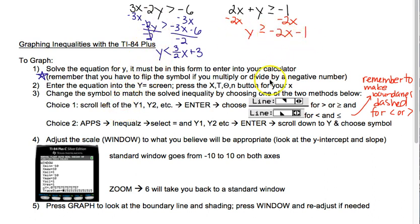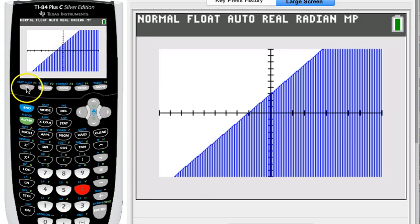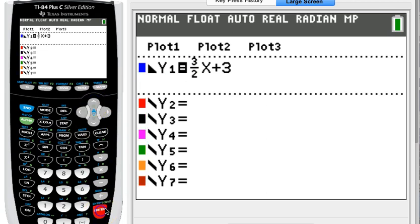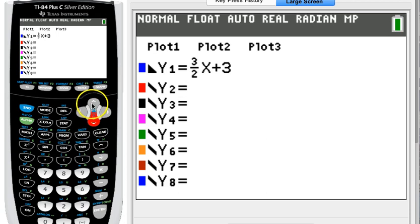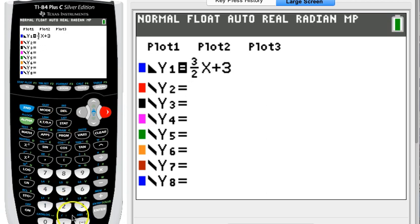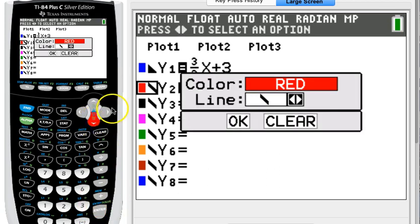Now I'm going to graph the other one, so -2x - 1, and I'm going to graph them both at the same time because I want you to see what it does with the system. Remember that you can turn equations off without deleting them by pressing enter on top of the equal sign. So -2x - 1, and this one was a greater than or equal to, so I'm going to scroll to the left of the y to press enter. And since it's a greater than or equal to, I want the upper half plane.